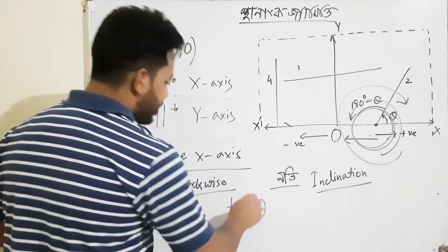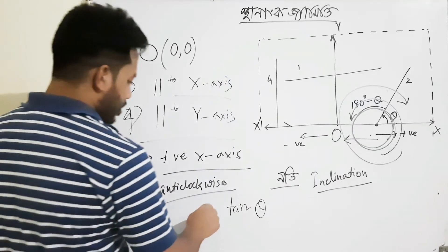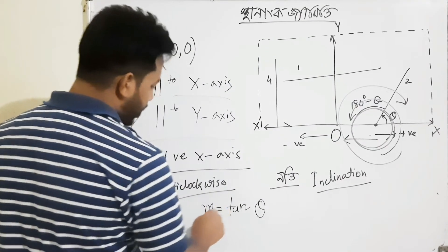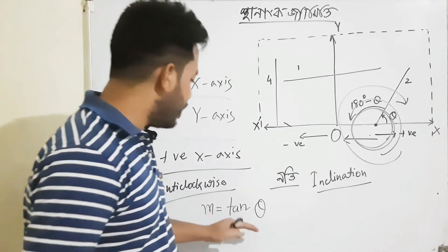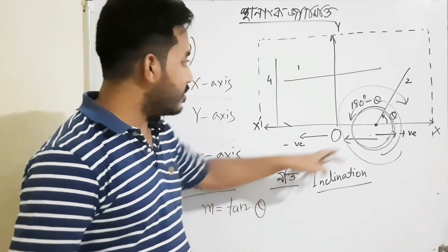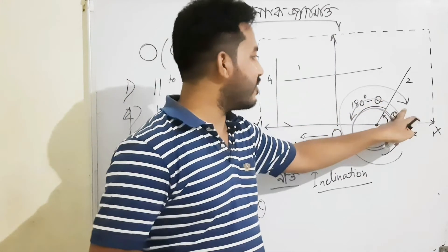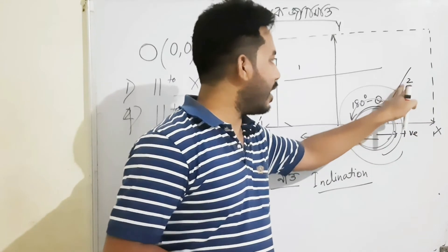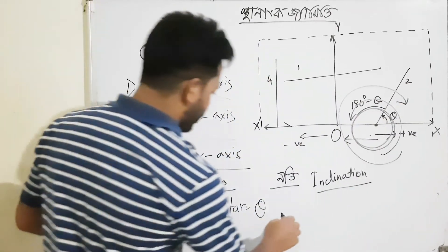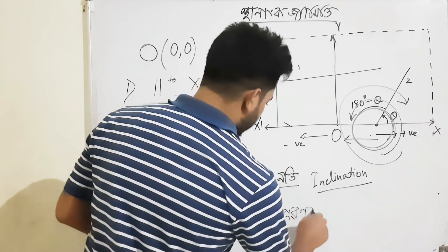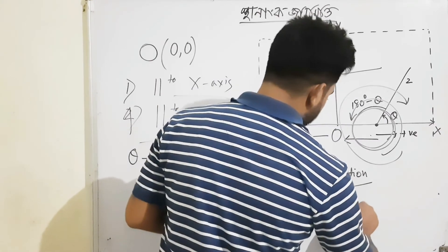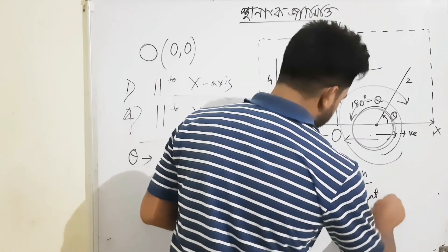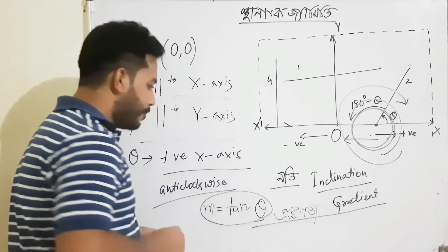The inclination — the angle formed — what is it equal to? It is a little angle, and the value associated with this angle is tan(theta). So the gradient of the line is tan(theta). This is what we call the gradient or slope — it equals tan(theta).